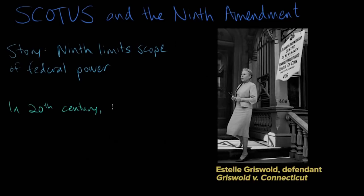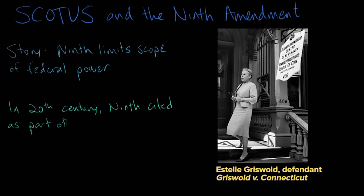In Griswold v. Connecticut, for example, Justice Arthur Goldberg argued that the Ninth Amendment supported the court's invalidation of state contraception laws. Justice Douglas said that the Constitution and the particular rights in the Bill of Rights include certain penumbras formed by emanations from the particular guarantees that may create broader unenumerated rights, and privacy was one of them. The Fourth Amendment protects against unreasonable searches and seizures, the Third Amendment protects the right not to have soldiers quartered in the home, and the First Amendment protects freedom of association. From these particular expressions of privacy, Douglas extracted a broader right of privacy which could be extended to cover a married couple's right to use contraception.